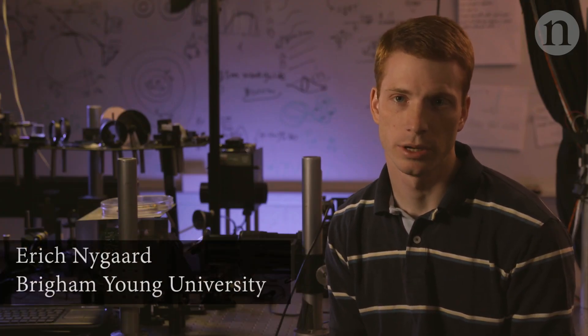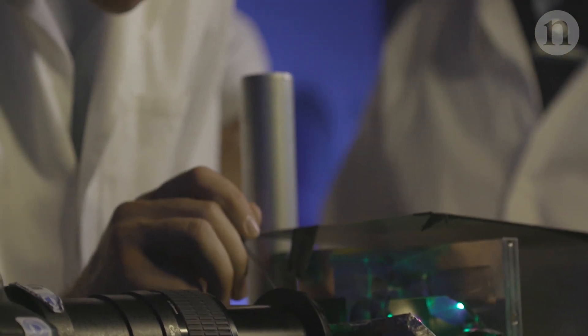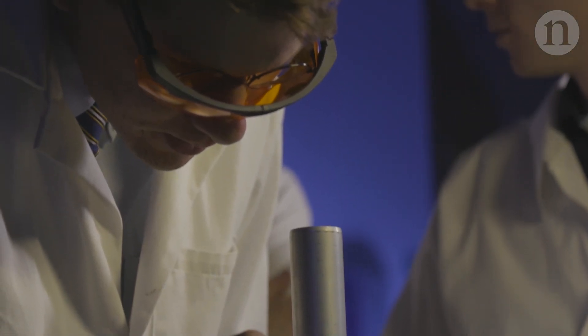Scientists call these science fiction-worthy displays volumetric images. A volumetric image is essentially an image that is taking up three-dimensional space. And our approach is that we're actually using a laser beam to trap a particle.